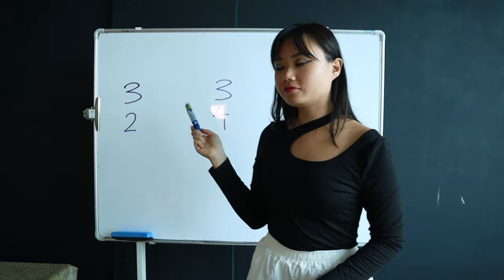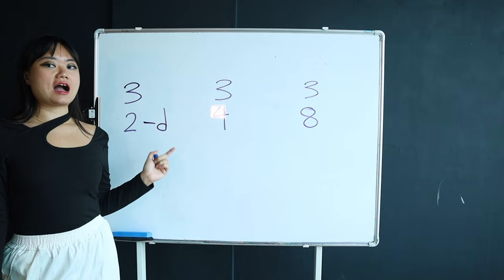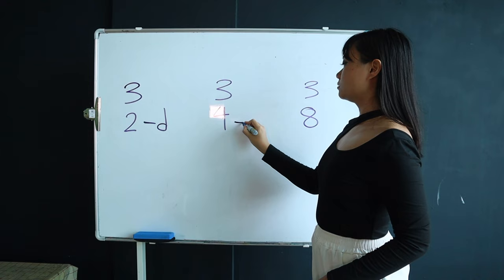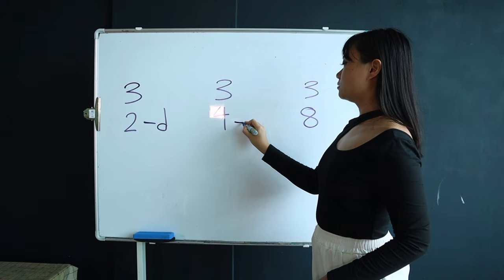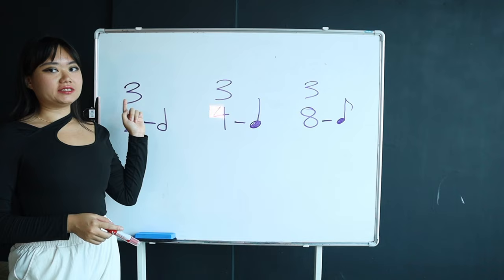I have three different time signatures written here with different bottom numbers. If the bottom number is two, it means that it's going to be half count of each. If the bottom number is four, you're gonna be counting in quarter notes. And if the bottom number is eight, you're gonna be counting in eighth note beats.